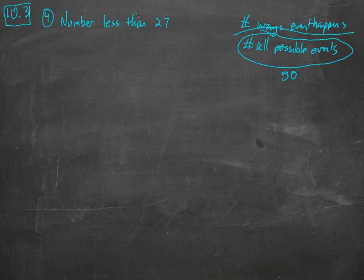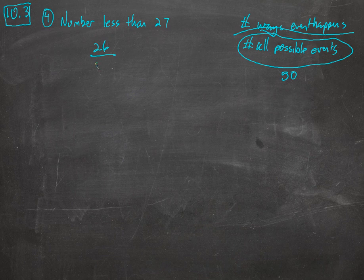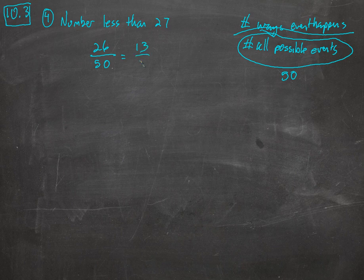So what's the probability that you'll pick a number that's less than 27? Well, how many numbers are less than 27? There's 1 through 26. There's 26 numbers that are less than 27. That's a probability of 26 out of 50. We can simplify this. You've got 13 out of 25. This is a prime number so it's not going to simplify anymore.